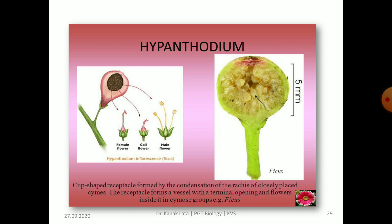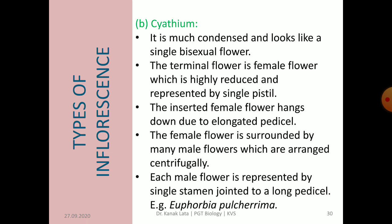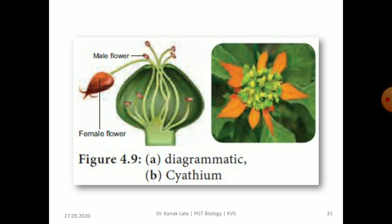Another special type of inflorescence is cyathium. It is much condensed and looks like a single bisexual flower. In this case, there is a single terminal female flower which is highly reduced and represented by a single pistil, but it is inserted and hangs down due to an elongated pedicel. The female flower is surrounded by many male flowers arranged centrifugally; each male flower is represented by a single stamen having a long pedicel. It is seen in Euphorbia pulcherrima. In the given figure, you can see the cyathium inflorescence and how the female flower is hanged down.